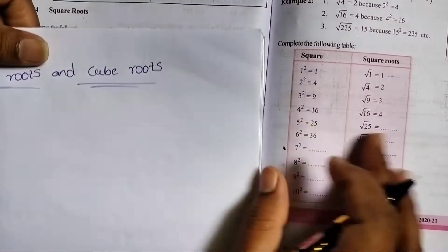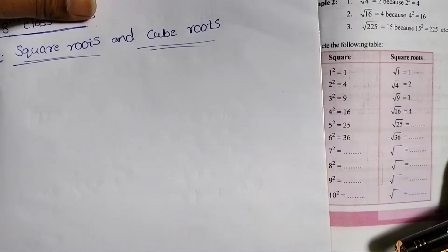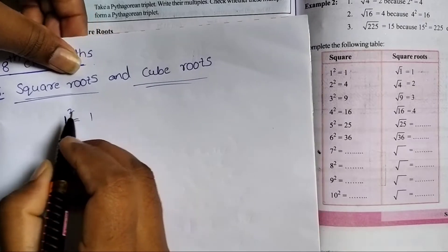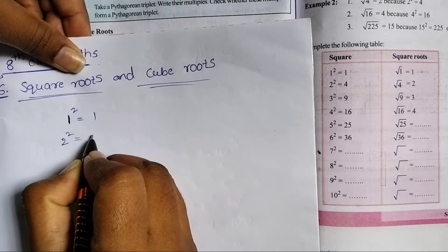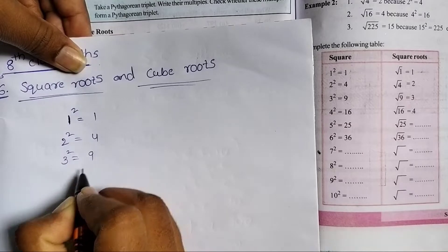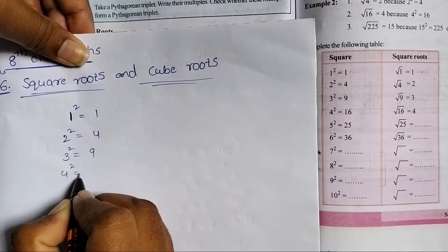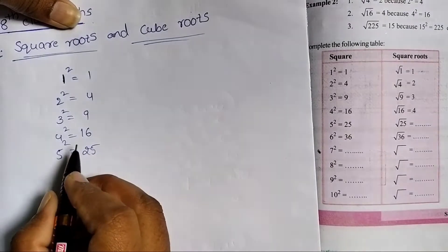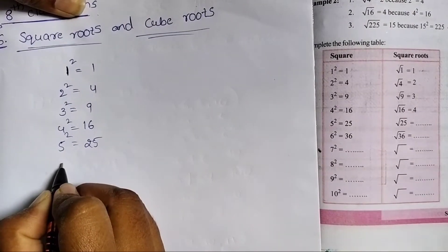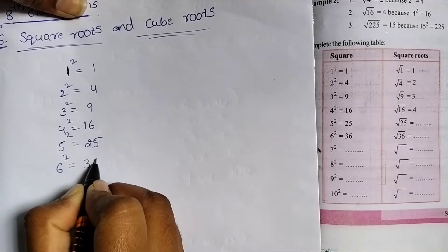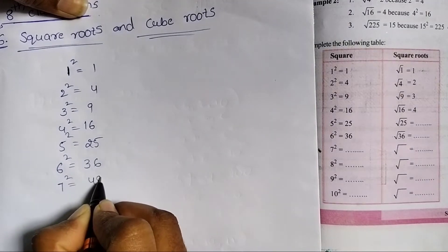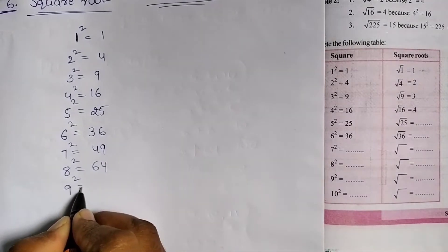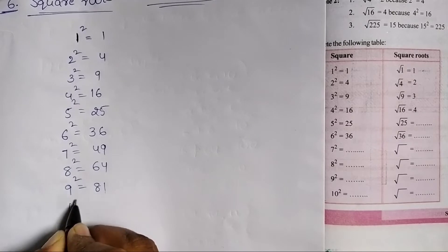1 squared is equal to 1. 2 squared is equal to 4. 3 squared is equal to 9. 4 squared is equal to 16. 5 squared is equal to 25. 6 squared is equal to 36. 7 squared is equal to 49. 8 squared is equal to 64. 9 squared is equal to 81. 10 squared is equal to 100.